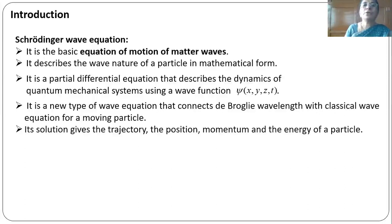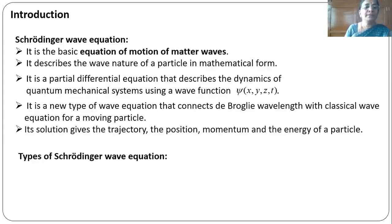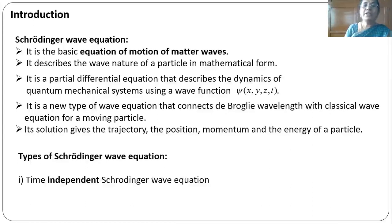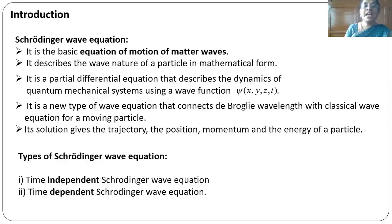Its solution gives the trajectory, the position, momentum and energy of the particle. There are two types of Schrödinger wave equation: one is the time-independent Schrödinger wave equation and the other is the time-dependent Schrödinger wave equation.